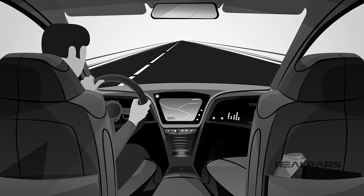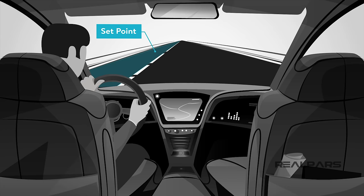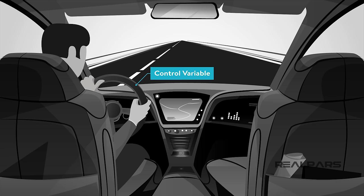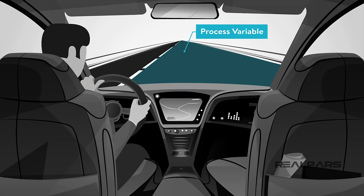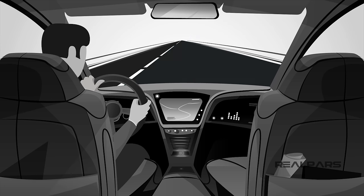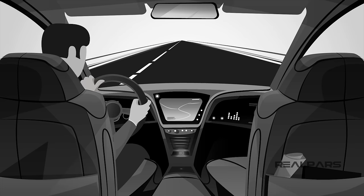Another example of a slightly more complicated controlled process, for understanding purposes, would be you changing lanes while driving. You would be the controller. The lane that you want to be in is your set point. The steering wheel would be your control variable, and your current position on the road would be your process variable. Your eyes are your feedback. You adjust your steering wheel according to many factors, such as the angle of your wheels, possible wind disturbance, the position of other vehicles.